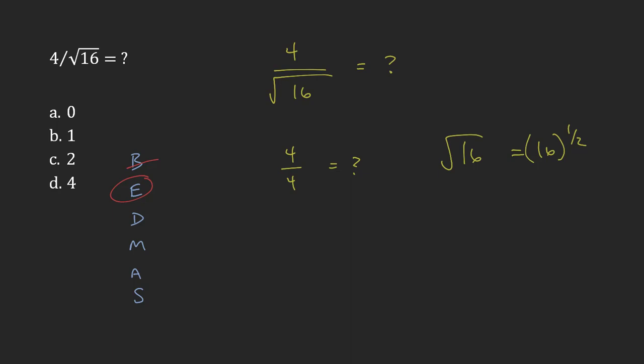Now I can move on to my division. And so 4 over 4 is equal to 1. And so my answer is b.